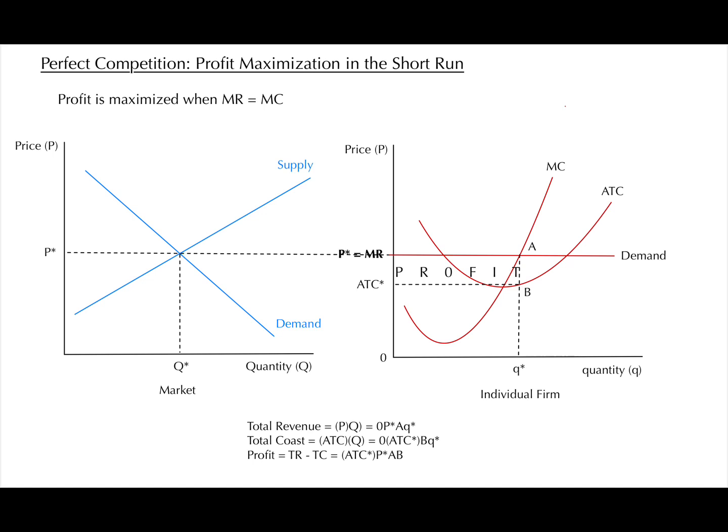As you can see, the dotted line that signifies P star goes through the market graph into the graph on the right, which is for an individual firm. This is because an individual firm in a perfectly competitive market is a price taker. It takes the equilibrium price of the product in the market as the price for its own product. P star equals the marginal revenue, since the added revenue gained from selling one additional product is equal to the price at which said product is sold. This line also becomes the demand curve for the individual firm's product.